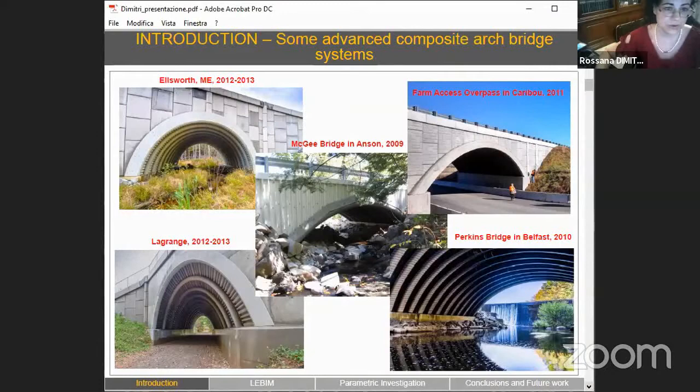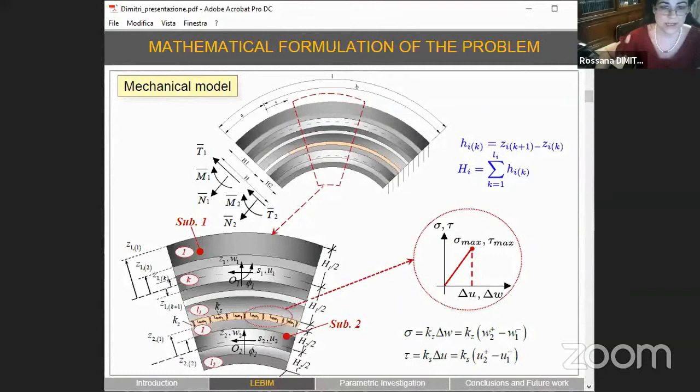Let's reconsider our mechanical model, where we consider a layered curved specimen made by two orthotropic sublaminates of general shape, modeled as Timoshenko beams, partly cracked and partly connected by an elastic brittle interface with elastic constants both in mode one and mode two - in the longitudinal and in the orthogonal direction.